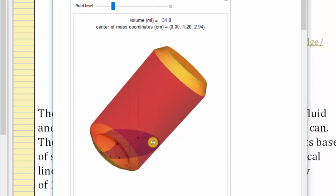Notice that at this fluid level, the center of mass is now between the two vertical lines, which means it's above the base of support, and the can will now balance on its edge.